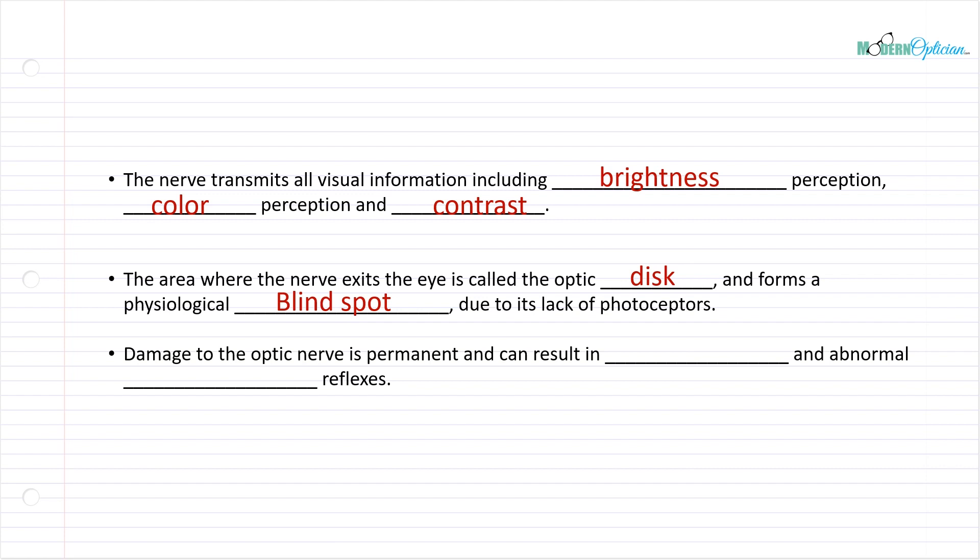Now, damage to the optic nerve is permanent. It can result in vision loss and abnormal pupillary reflexes because it's part of the central nervous system. That's another thing that's very important to mention here is that we've only talked about its implication with vision.